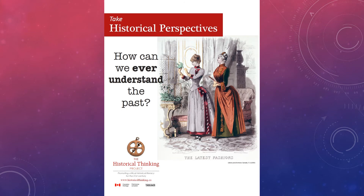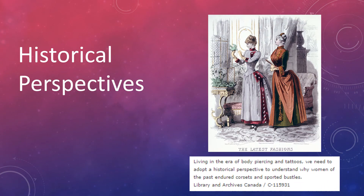Historical perspectives: how can we ever understand the past? The historical thinking concept of historical perspective is about understanding how social relationships, culture, technology, and other aspects of life shaped people's points of view in the past — their beliefs and opinions — in ways that we don't fully understand because our own context is shaping our points of view today. Historical perspective is about understanding how different things were in the past and how that impacted the thinking of people who lived in history.